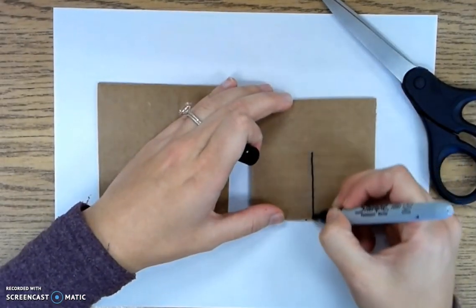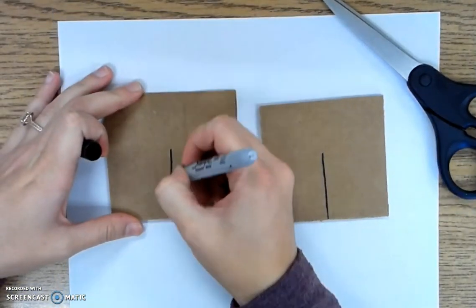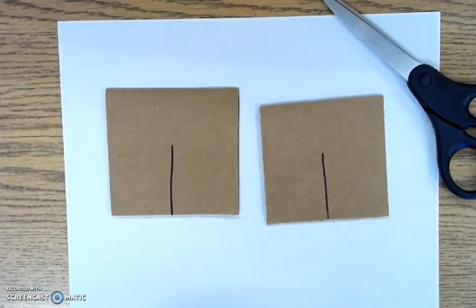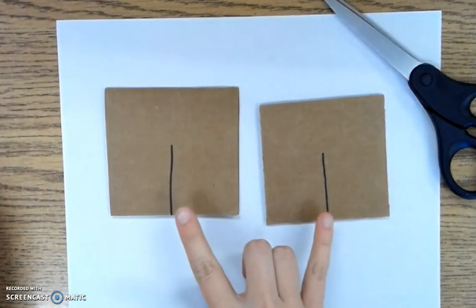So first I'm going to mark where I want these two pieces of cardboard to go together. Relatively the same length of line.